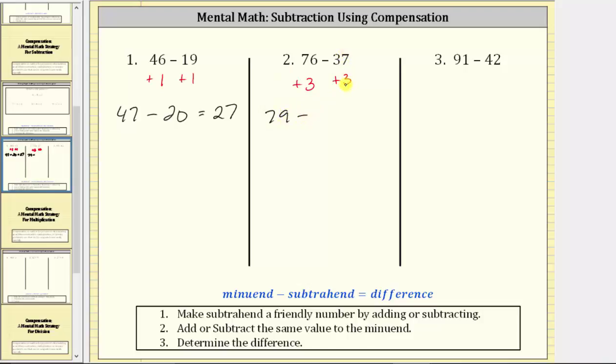37 plus three is 40. The equivalent difference is 79 minus 40, which equals 39.